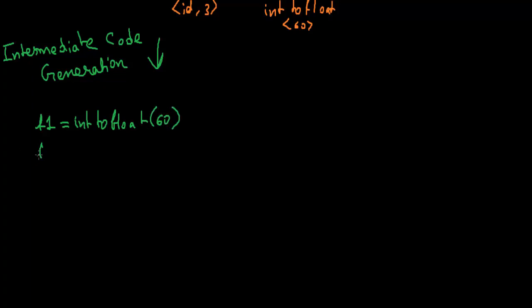Now t2, another variable, it will store id 3 multiplied by t1. Now we have t3, this will contain id 2 plus t2, and finally id 1 will store t3 value. Now this will go to intermediate code optimizer.